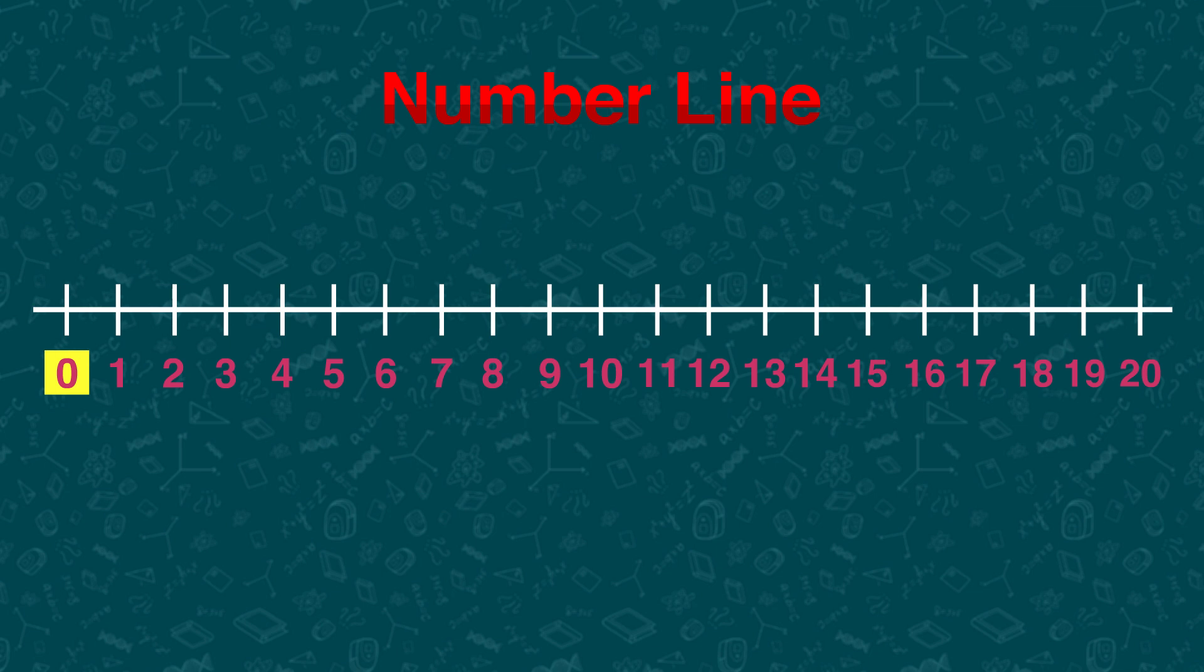Each number represents its distance from zero. The number one is one unit away from zero. The number two is two units away from zero.